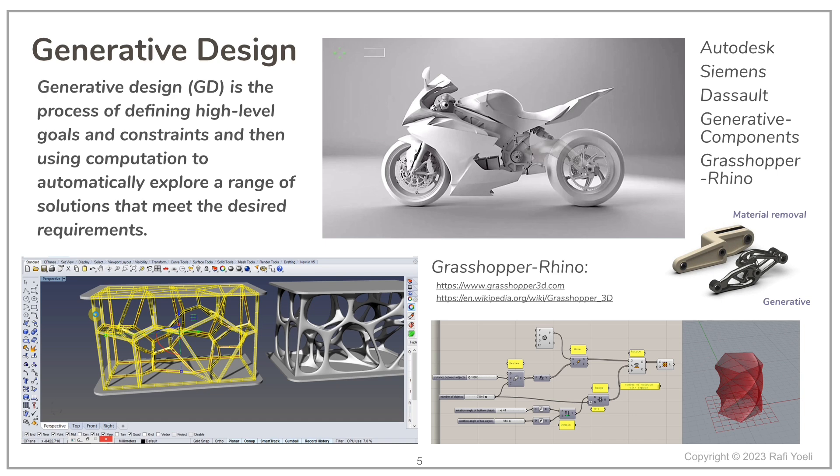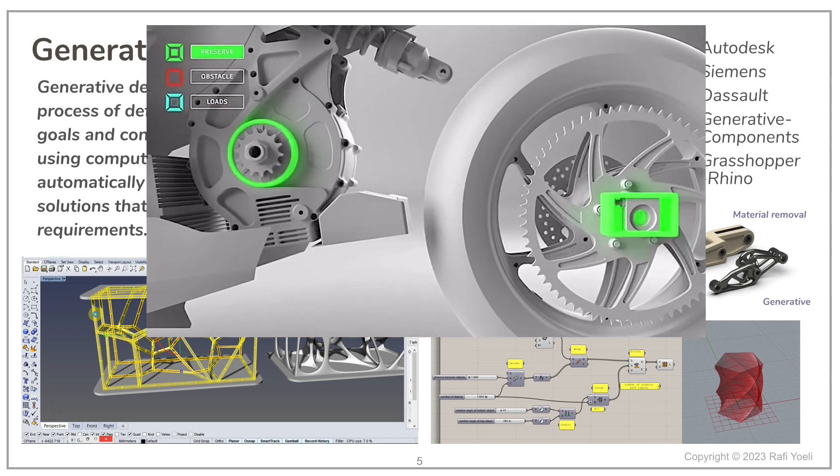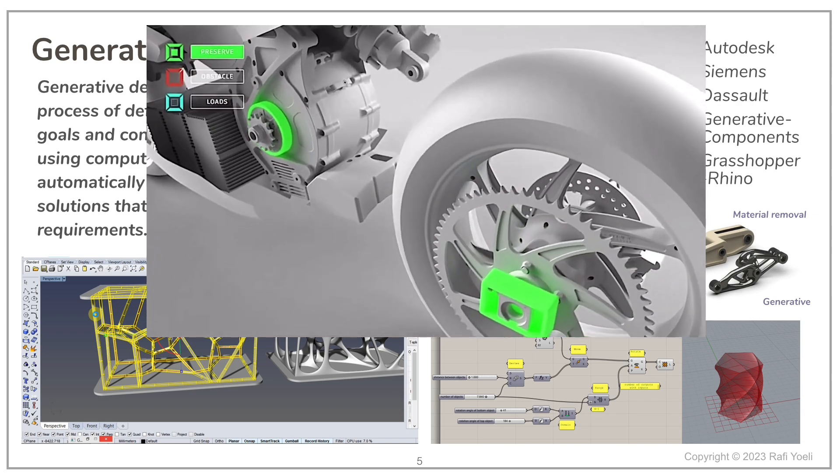Here's a short video from Autodesk. The goal here is to design a support structure between the chassis of a motorcycle and the rear wheel.